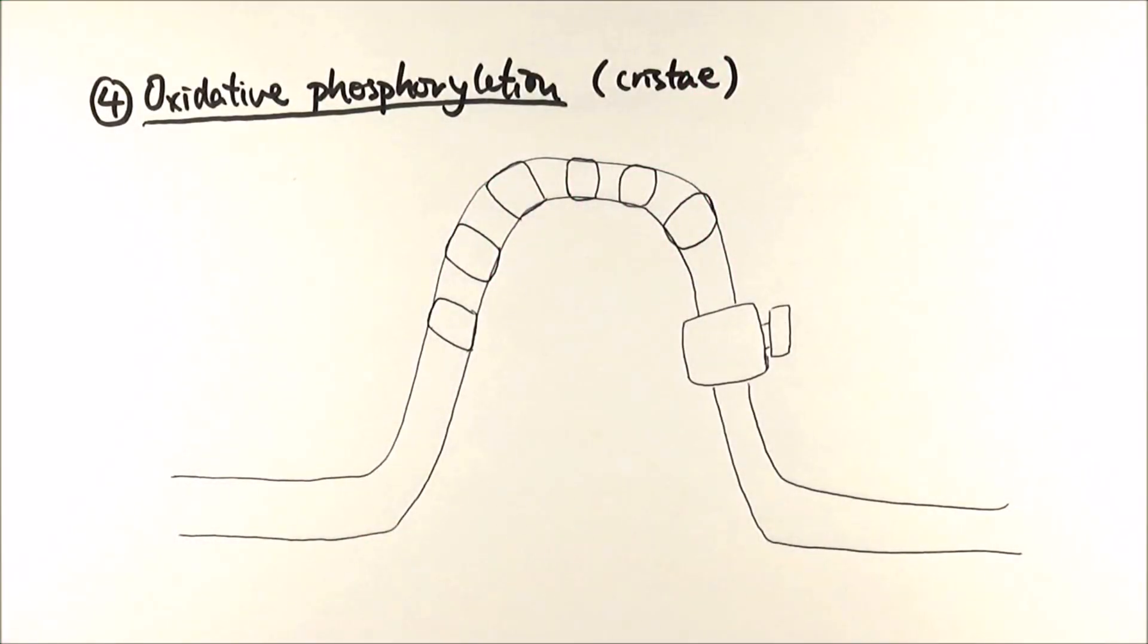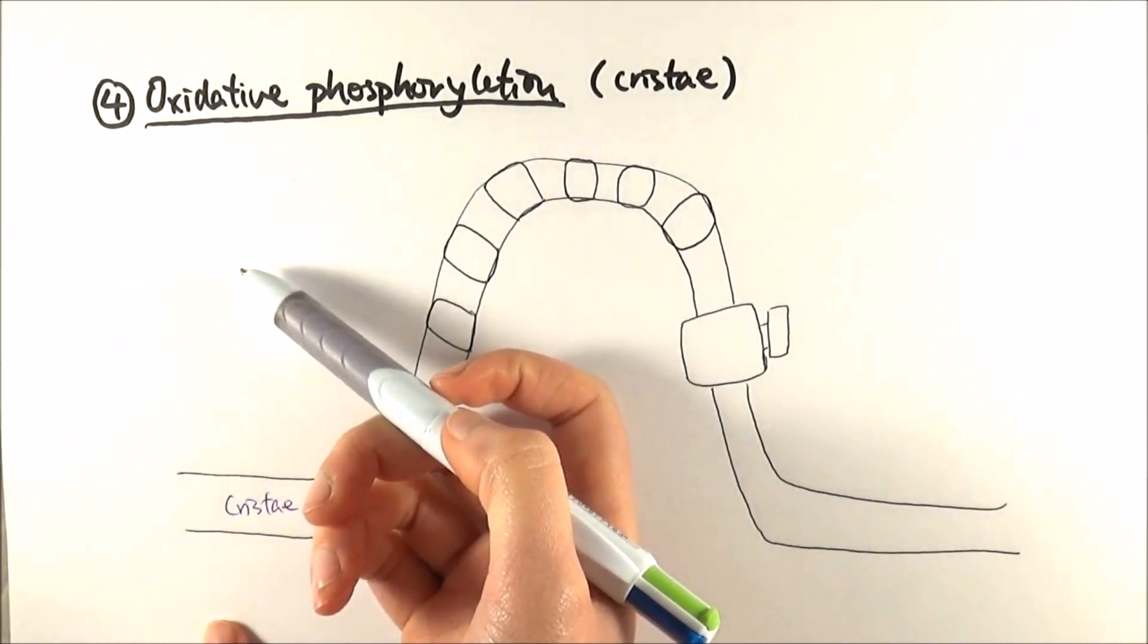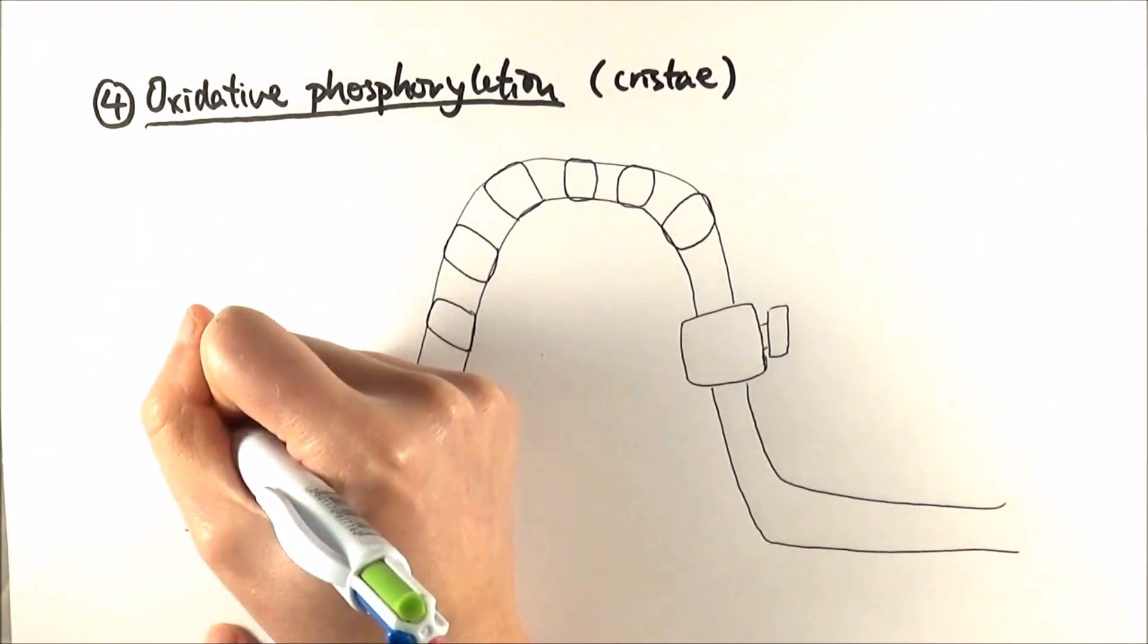Now, here comes the final stage of aerobic respiration, which is oxidative phosphorylation. Remembering CRISTA is the folded inner membrane, and then this is the inside of the mitochondria, and that is the matrix.